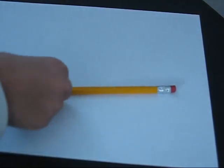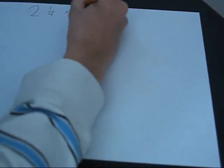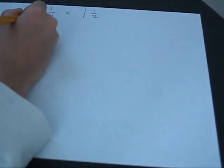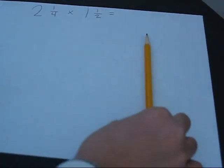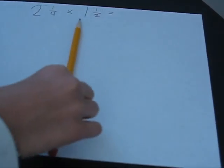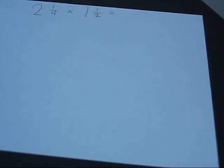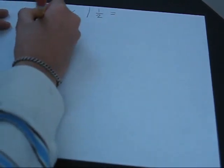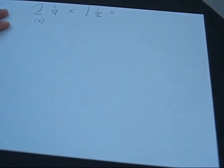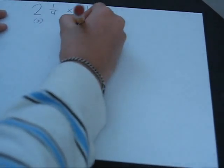At the top, let's write our equation: 2 and 1 fourth times 1 and 1 half equals. So for 2 and 1 fourth, we're going to make 3 sections because the fourths are going to be there — so 3. And then 1 and 1 half is 2.